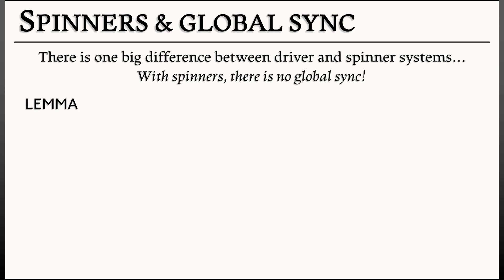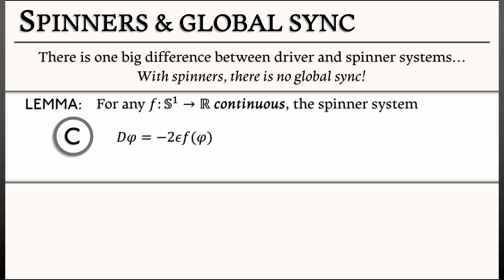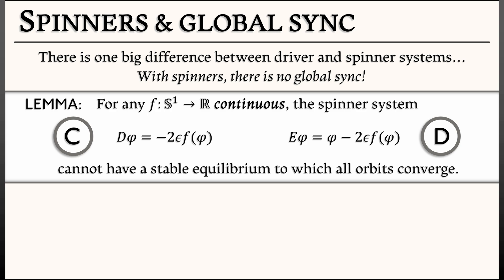Here's a lemma. For any continuous coupling function f: S¹ → ℝ, the spinner system in continuous time (d φ = -2ε f(φ)) and discrete time (E φ = φ - 2ε f(φ)) cannot have a stable equilibrium to which all orbits converge.